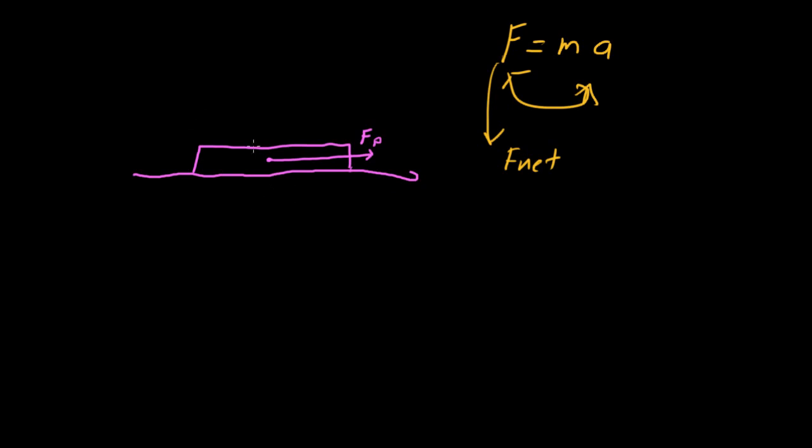And you might say, well, it's the weight of the book. No, that can't be right, because the weight of the book is in this direction. The weight is straight down. Down can't counteract left and right. Well, maybe it's the normal force. No, that doesn't work either. Because the normal force is straight up. There must be some force this direction that is equal and opposite the force of you pushing on the book. What force is that? If you said friction, then you got it. This is the force of friction.